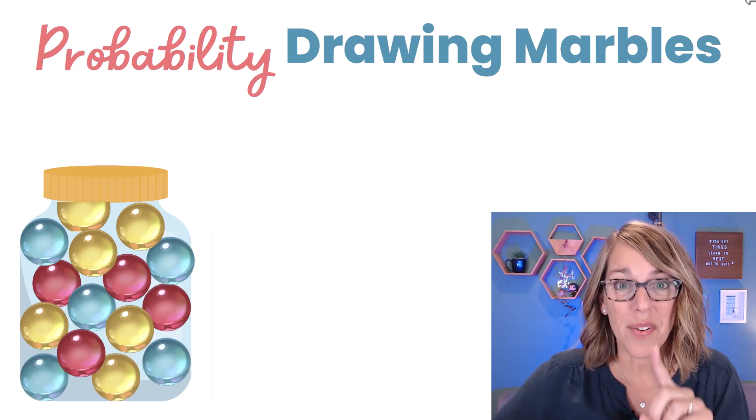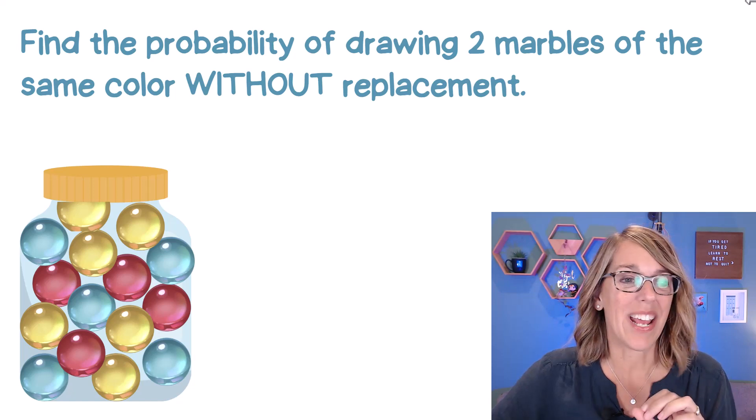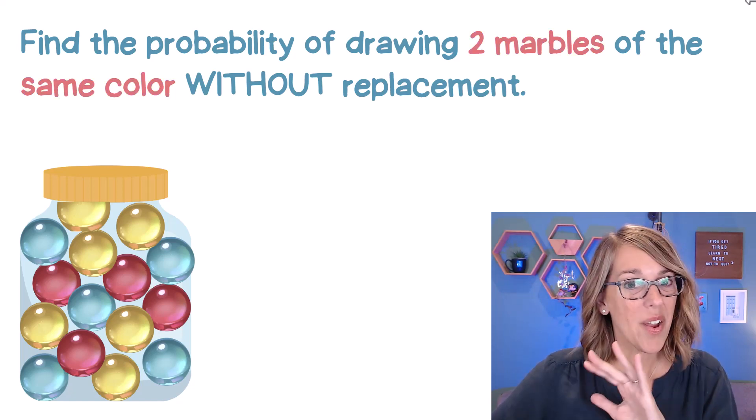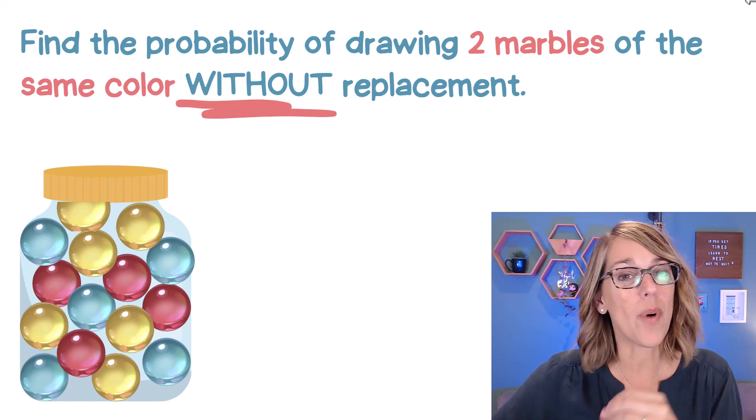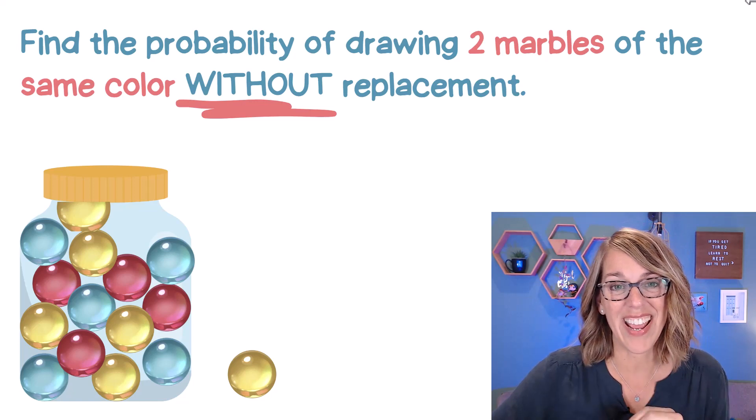Let's do some probability drawing marbles without replacement. We're going to work on this example. We will be drawing two marbles of the same color without replacement. That means that whenever we draw one marble out of the jar, it is going to come out and stay out.